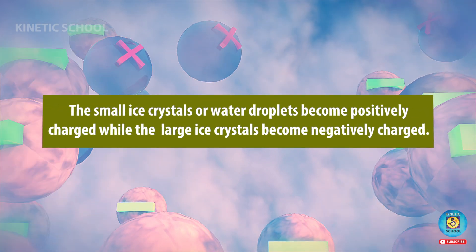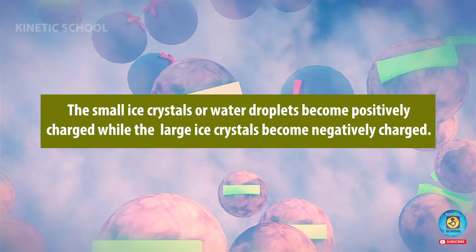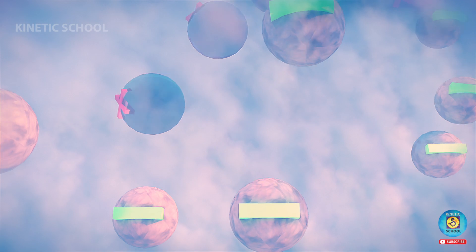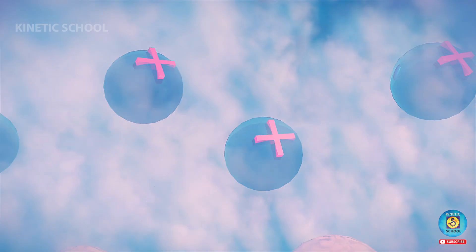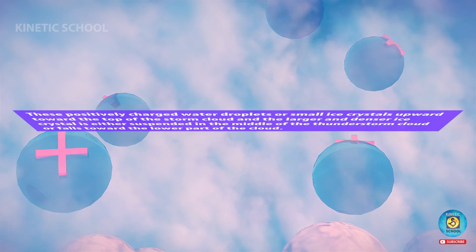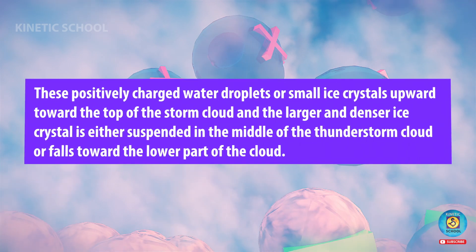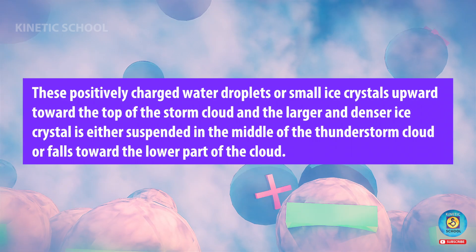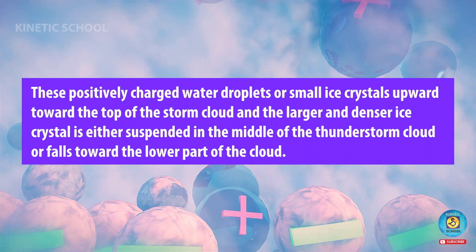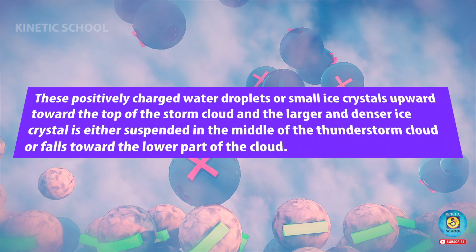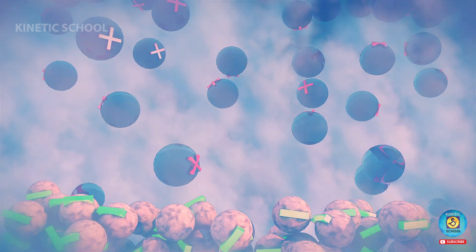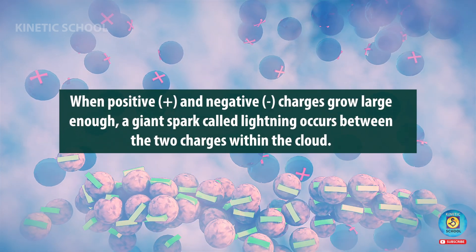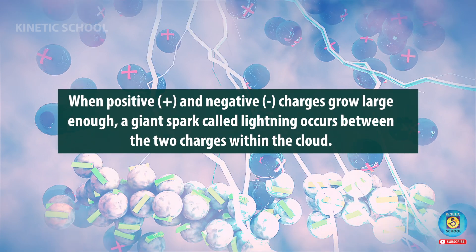The small ice crystals or water droplets become positively charged, while the large ice crystals become negatively charged. The positively charged water droplets or small ice crystals move upward toward the top of the storm cloud, and the larger, denser ice crystals are either suspended in the middle of the thunderstorm cloud or fall. When positive and negative charges grow large enough, a giant spark called lightning occurs between the two charges within the cloud.